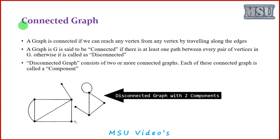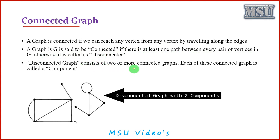We will discuss what is meant by a connected graph. A graph is connected if we can reach any vertex from any other vertex by traveling along the edges. A graph G is said to be connected if there is at least one path between every pair of vertices; otherwise it is called a disconnected graph. A disconnected graph consists of two or more connected subgraphs, each of which is called a component.